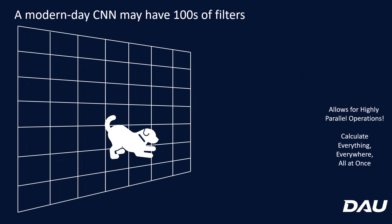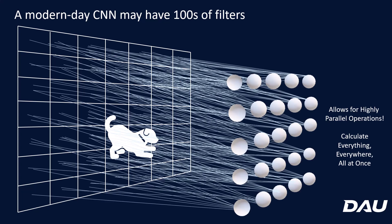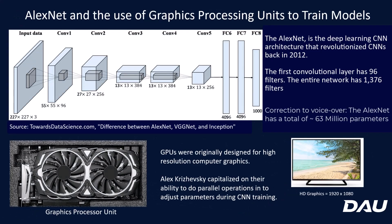Modern convolutional neural networks will have hundreds of filters. You might think that's a lot of calculations, but remember — none of these convolution outputs depend on each other. So you can calculate the whole thing at one time if you have enough compute power. If you have hundreds of filters, you can calculate hundreds of convolutions simultaneously.